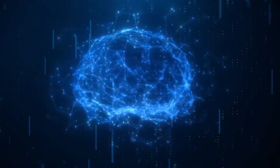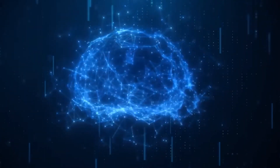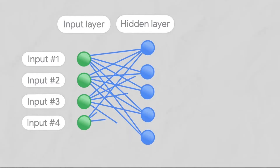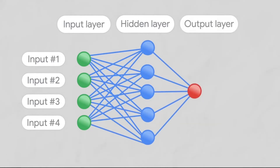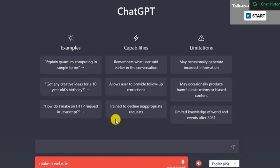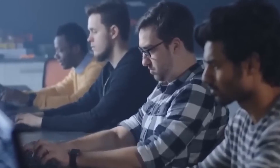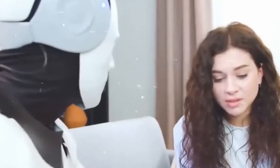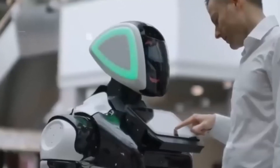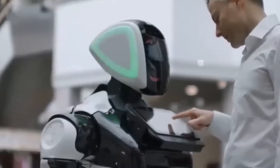Understanding context. ChatGPT has been trained using a transformer-based architecture, which allows it to understand context and dependencies between words. This context helps the model infer the intended meaning of a sentence, even if certain words or pronunciations may be influenced by an accent.